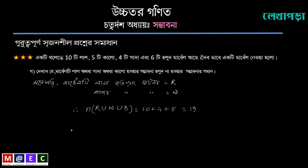The probability of R union W union B is equal to the number of R union W union B.